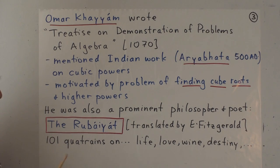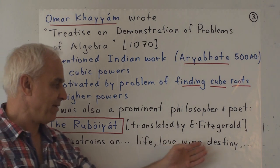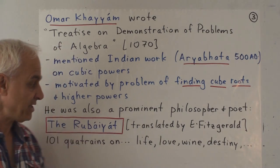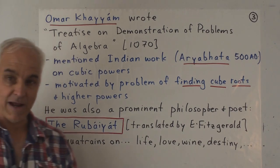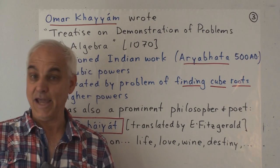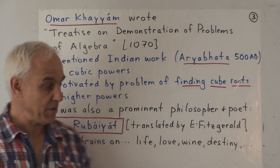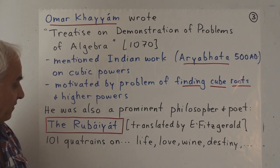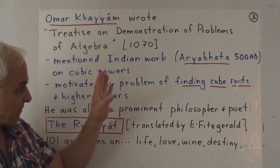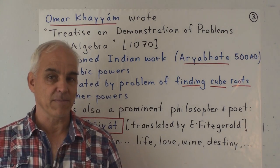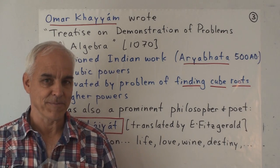And it's a series of quatrains, 101 quatrains on life, love, wine, destiny, and many other things. It's actually quite pleasant to read. And I might give you a bit of selection of that at the end of this lecture. So he was a multifaceted fellow, made contributions in a lot of directions. We're going to see his work in some other famous problems on this list later on.